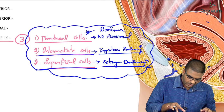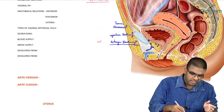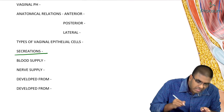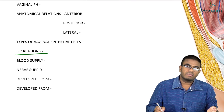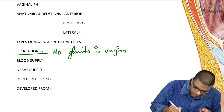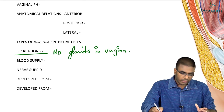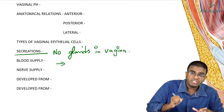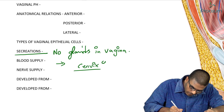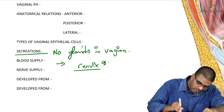Regarding vaginal secretions: there are no glands present in the vagina. The secretions in the vagina come majorly from the cervix — it is the cervical glands that produce mucus which dribbles down into the vagina.